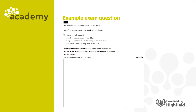Now let's look at a question you might get in an exam. You make several craft items which you sell online. One item is a wooden photo frame made of a backboard measuring 40 centimeters by 25 centimeters, a top and bottom piece measuring 45 centimeters by 5 centimeters each, and two side pieces measuring 20 centimeters by 5 centimeters each. Make a plan of the pieces of wood using the graph paper provided. Use a scale of 1 to 5. Pause the video, have a go at answering the question, and press play when you're ready for the answer.